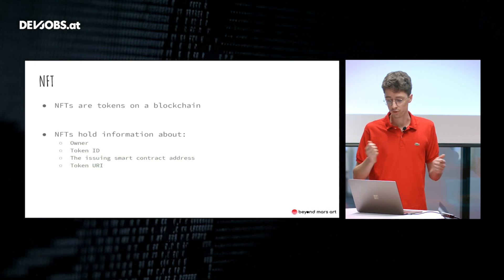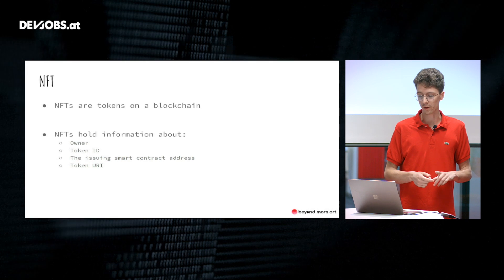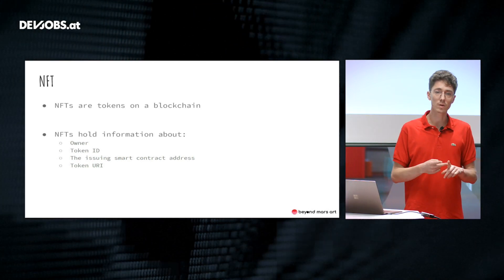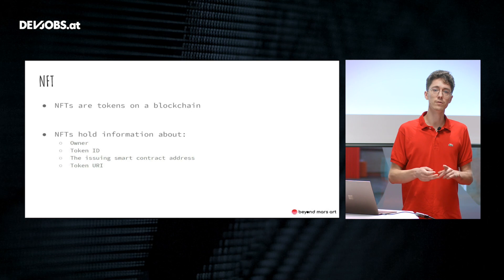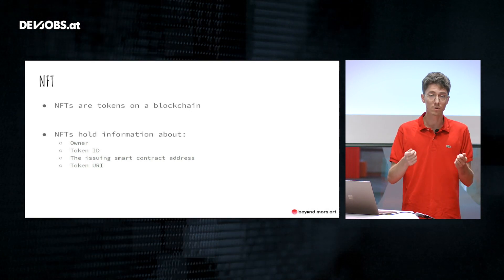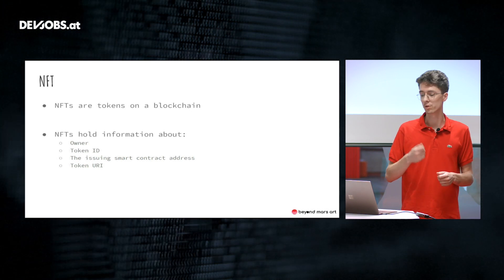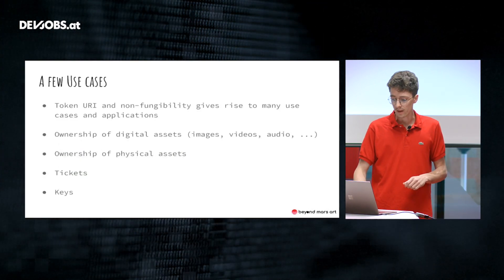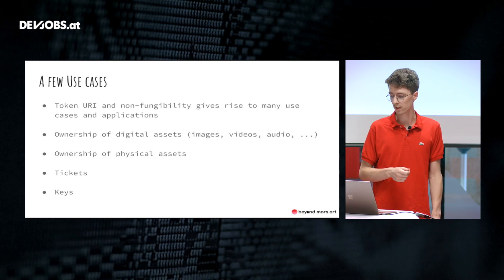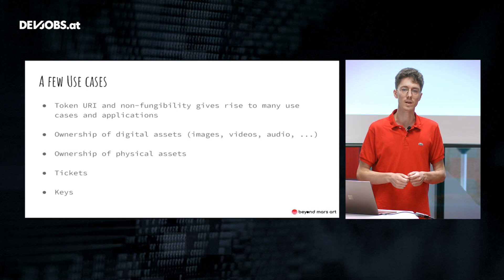So NFTs are tokens on a blockchain and they hold information — information about their owner, a unique token ID, information about the issuing smart contract that created the token, and a token URI. This token URI, combined with the non-fungibility of NFTs, gives rise to many very interesting use cases and applications.